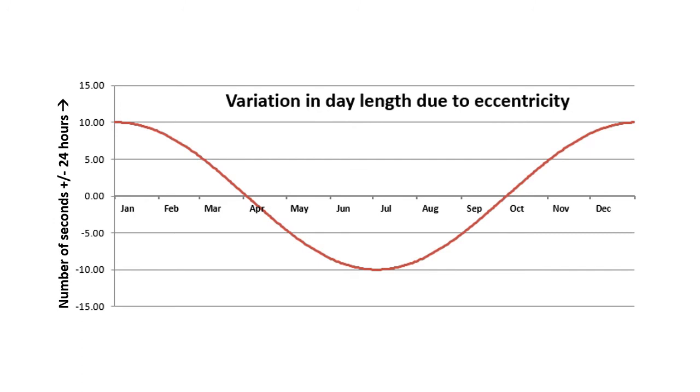This graph shows the variation in the length of the solar day if the eccentricity of the Earth's orbit were the only factor.